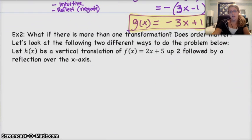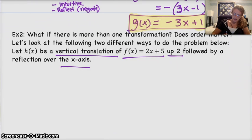Last problem. This one's a thinker. I recommend pausing it, trying it. Alright, so what if there's more than one transformation? Does order matter? Look at the following two different ways to solve the problem. Let h of x be a vertical translation of f of x up 2, followed by reflection over the x-axis. Now, if you just try to do everything at once, you might do, okay, vertical translation up 2, followed by reflection over the x-axis. So, you might say, okay, up 2 is f of x plus 2, and then I need to reflect that over the x-axis, so I'm gonna make that negative.